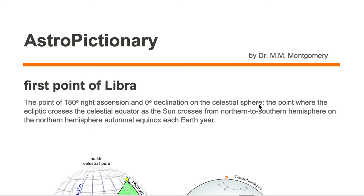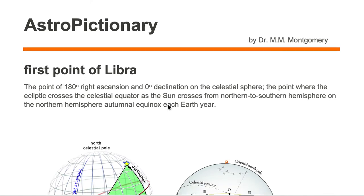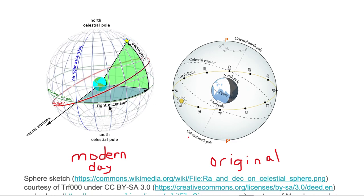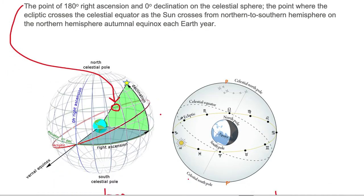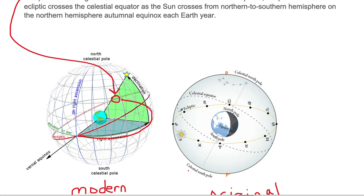Let's look at the first part of this definition. It says the point of 180 degrees right ascension and zero degrees declination. Here on the left we have a modern day celestial sphere. Right ascension is as labeled and declination is this blue line. We're starting with zero-zero at the point where the green, blue, and red lines meet, and we're going to go right ascension 180 degrees to where the ecliptic crosses the celestial equator — that is the first point of Libra. We're at 180 degrees right ascension and zero degrees declination; we didn't go up and we did not go down.